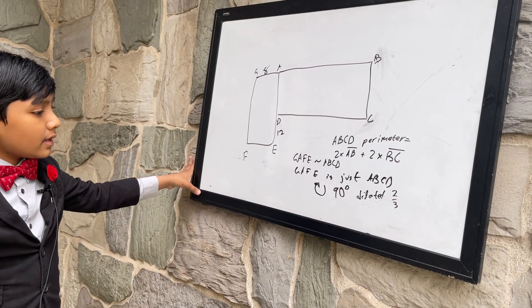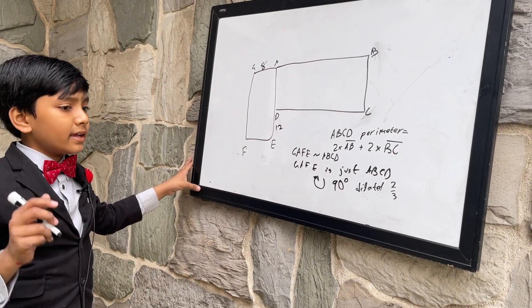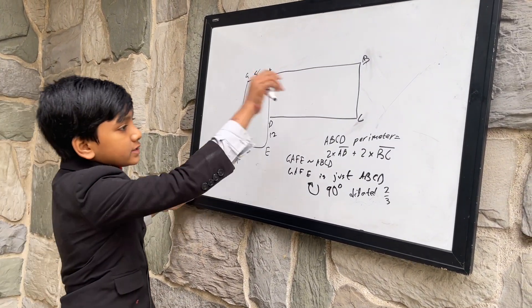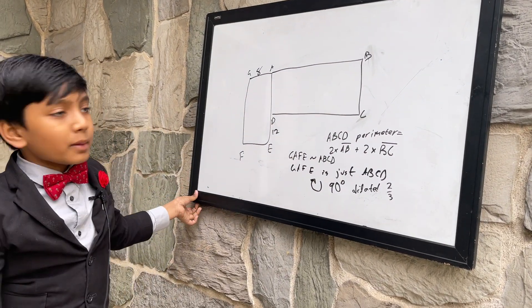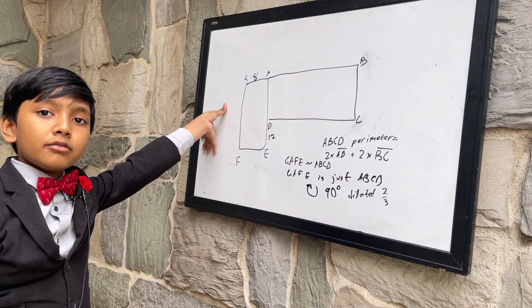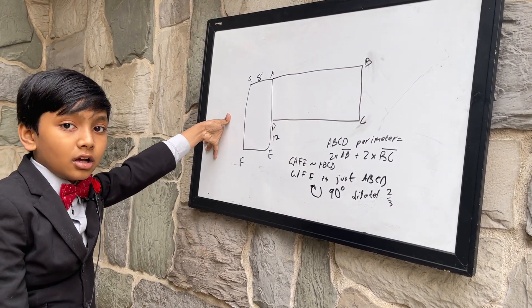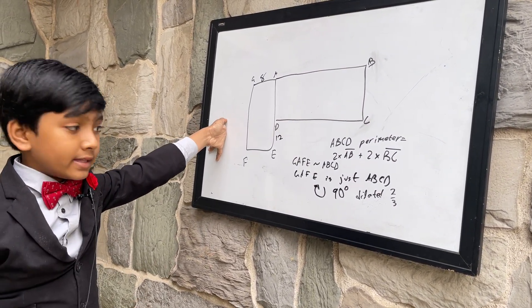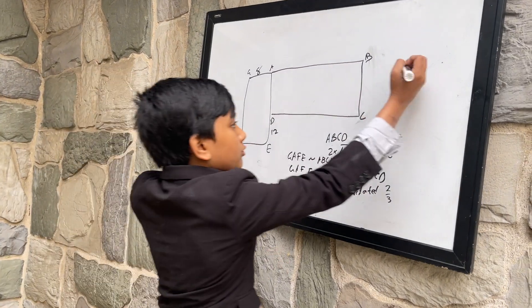So, now, that means that all of the sides in ABCD were multiplied by two-thirds in order to create the dimensions of GAFE. So how do we reverse that multiplication? Well, obviously by multiplying the inverse, which would be three-halves.